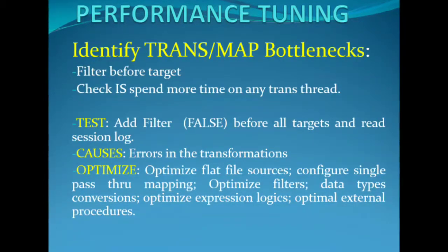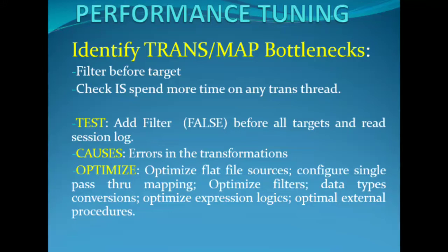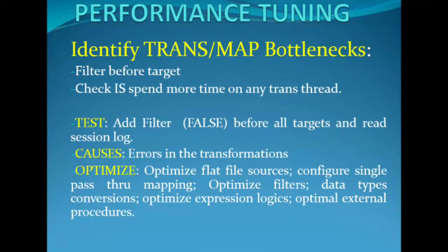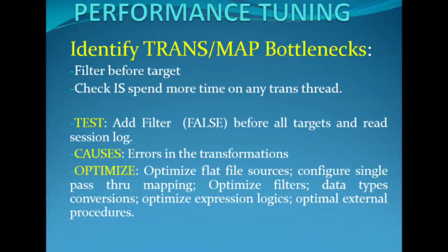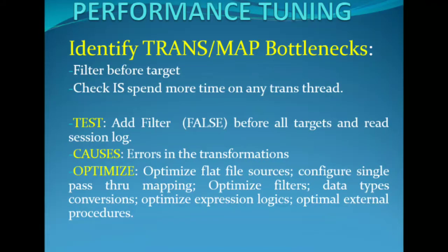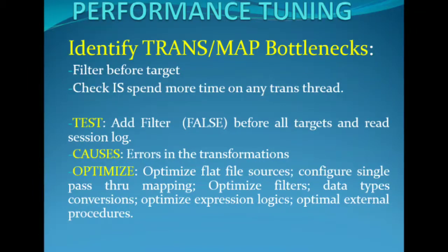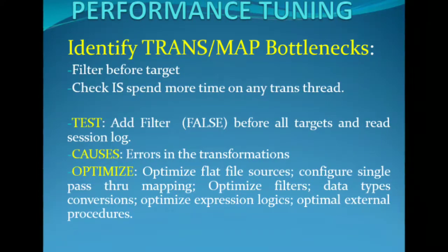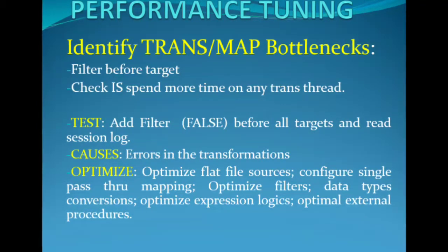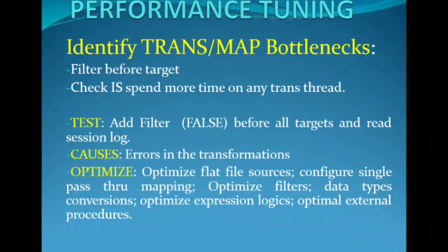Once source and target bottlenecks are identified and eliminated, look at mapping or transformation bottlenecks. This takes more time to implement but can significantly boost session performance. Focus on mapping-level optimization after optimizing sources and targets. Reduce the number of transformations in the mapping, delete unnecessary links between transformations, and configure the mapping with the least number of transformations and expressions to do the most work possible.